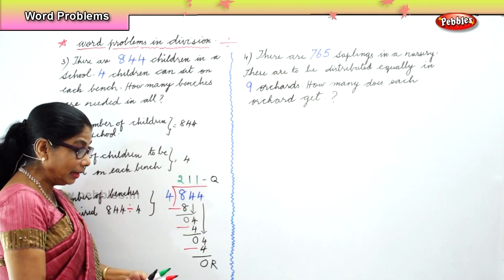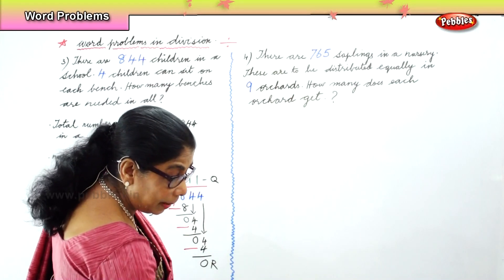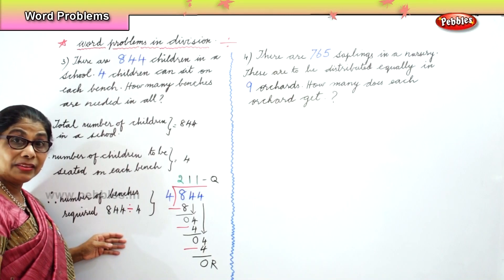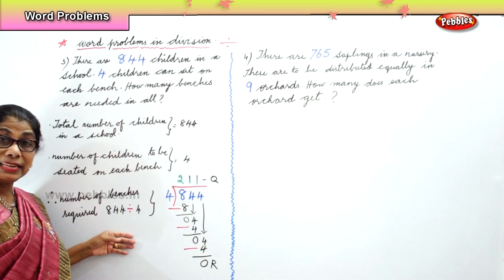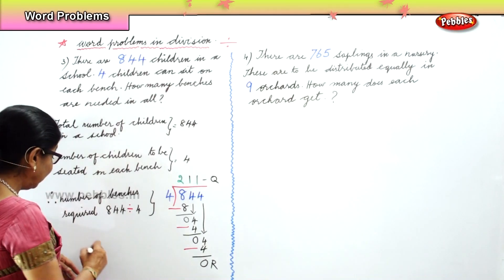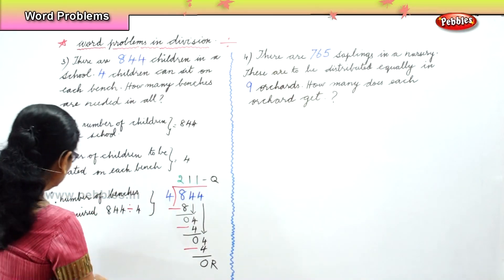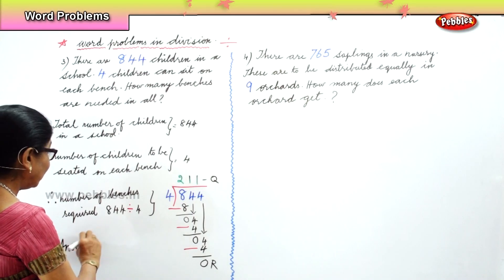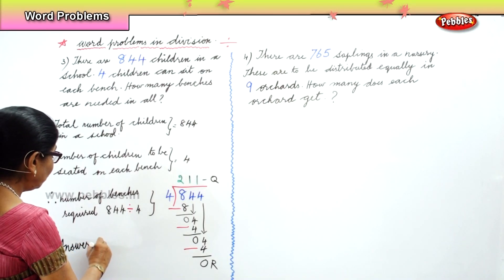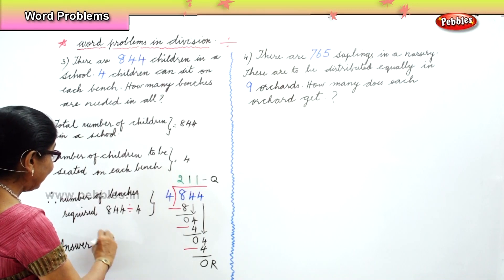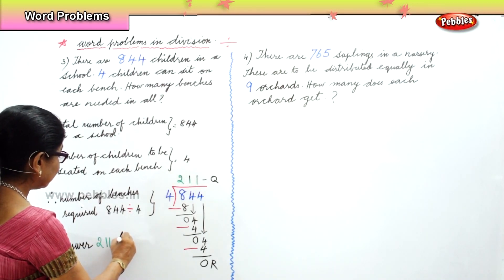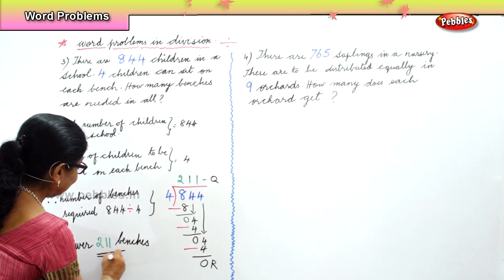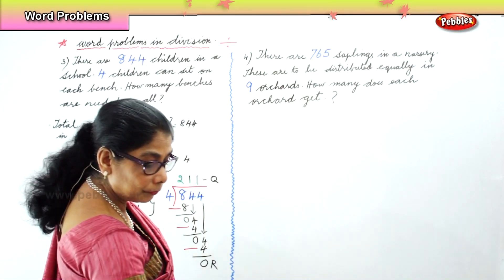This is your quotient, this is your divisor, and this is your dividend. So what is your answer? How many benches are required? Two hundred and eleven benches are required to seat eight hundred and forty-four children. Your answer is two hundred and eleven benches.